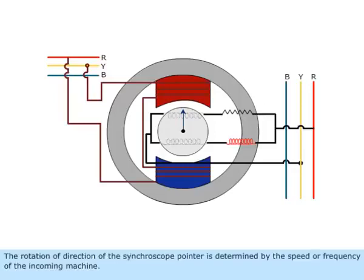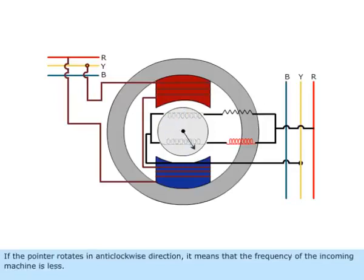The rotation direction of the synchroscope pointer is determined by the speed or frequency of the incoming machine. If the pointer rotates in anticlockwise direction, it means that the frequency of the incoming machine is less.